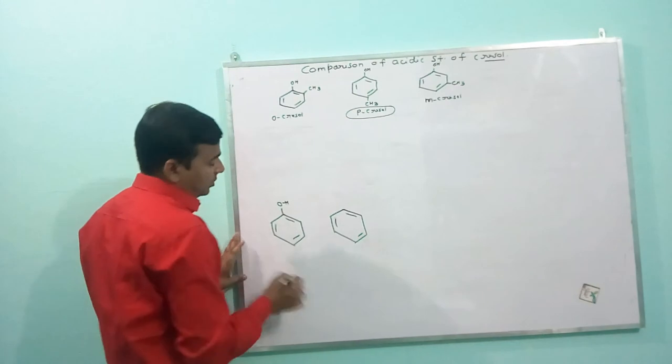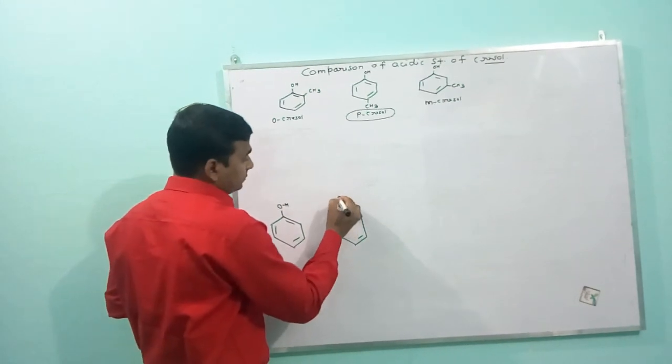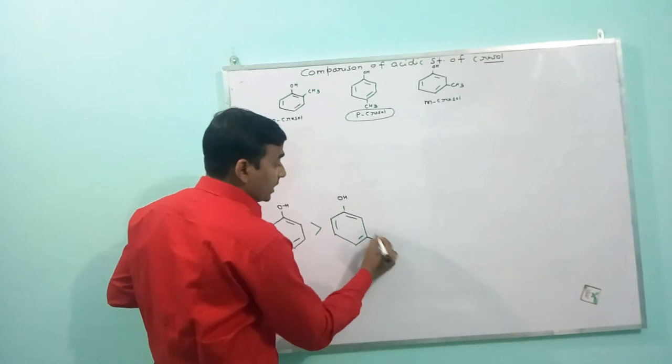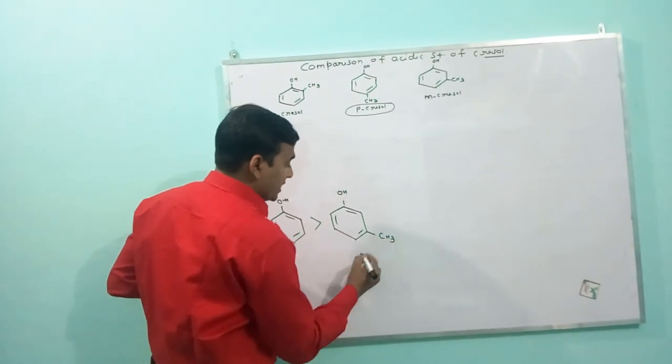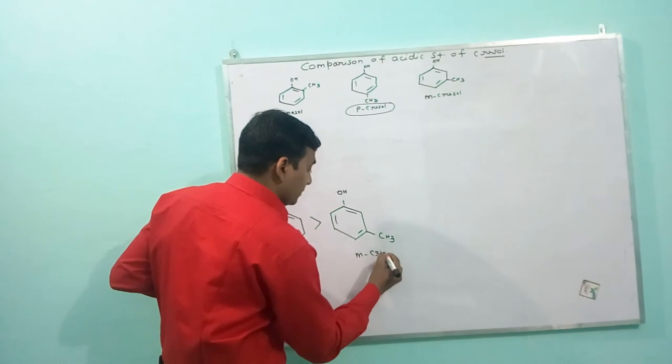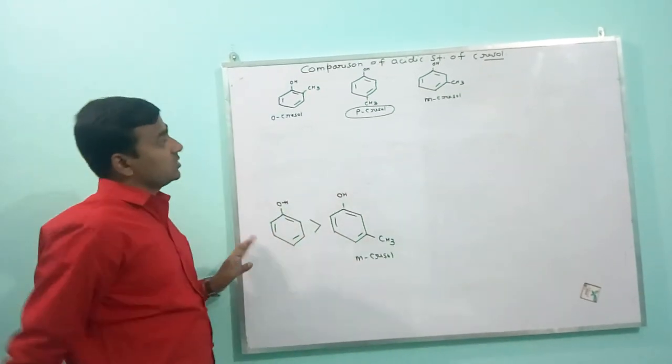There is no electron donating group. Meta cresol is more acidic than ortho and para cresols. Now,